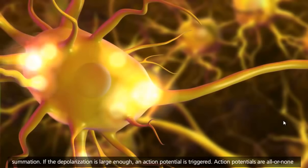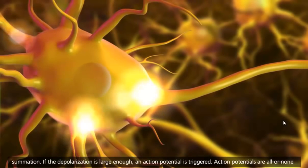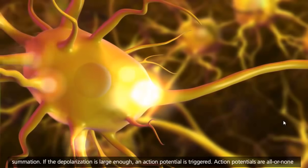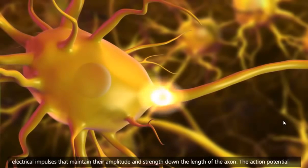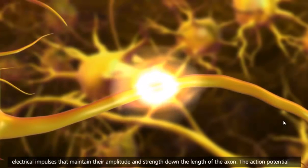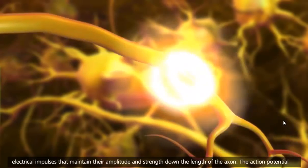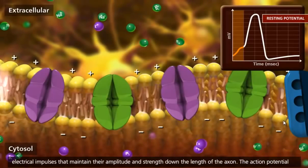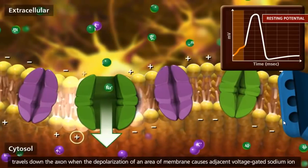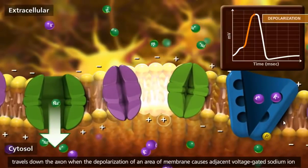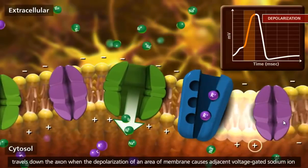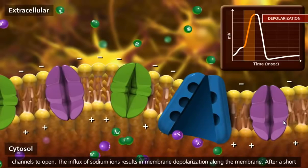If the depolarization is large enough, an action potential is triggered. Action potentials are all-or-none electrical impulses that maintain their amplitude and strength down the length of the axon. The action potential travels down the axon when the depolarization of an area of membrane causes adjacent voltage-gated sodium ion channels to open.